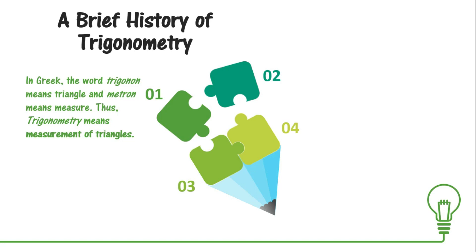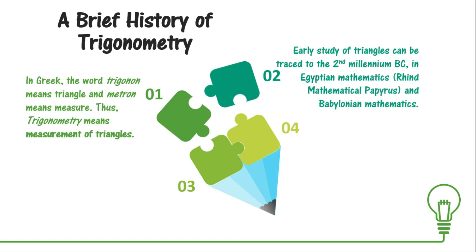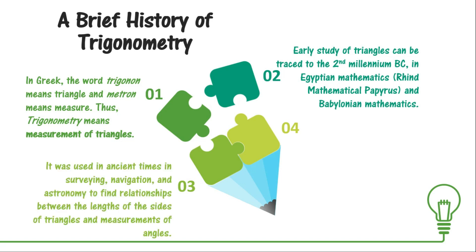When did it all start? Early study of triangles can be traced to the 2nd millennium BC in Egyptian mathematics, particularly in the ninth mathematical papyrus, and was also found during Babylonian mathematics. Due to lack of technology back then, trigonometry was used in surveying, navigation, and astronomy to find relationships between the lengths of the sides of triangles and measurements of the angles.